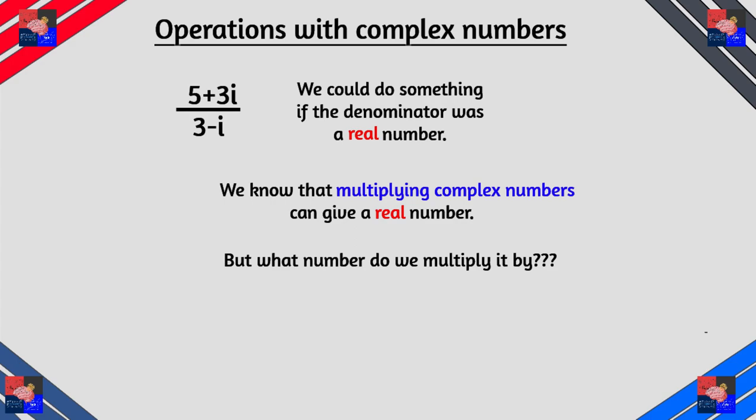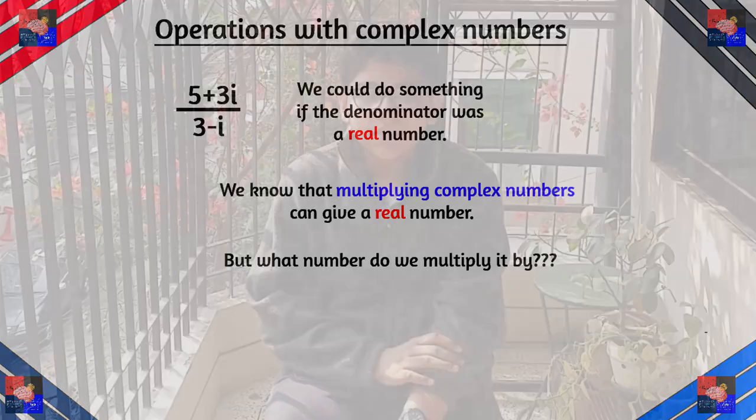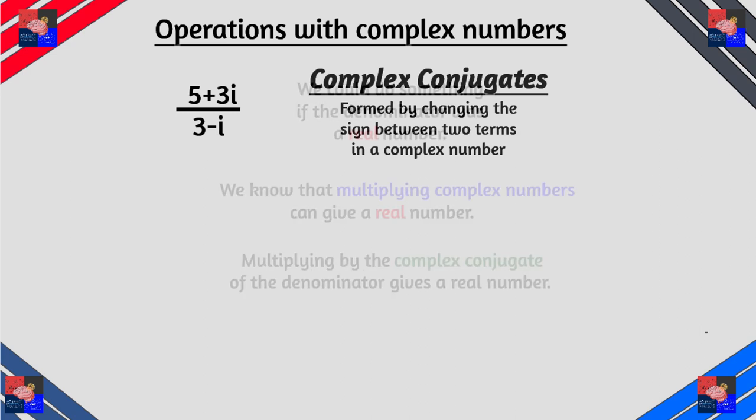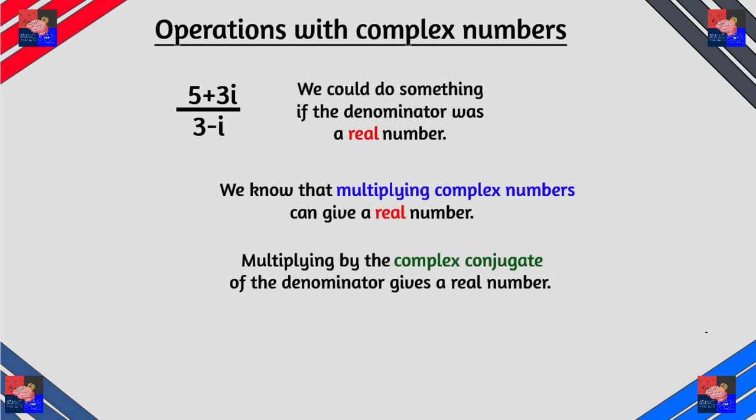But what do we multiply it by? This is where I introduce complex conjugates. Complex conjugates are basically the same equation but with the operation reversed. Now multiplying by the complex conjugate gives the real number.